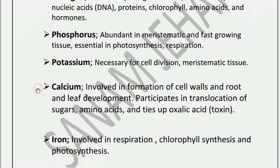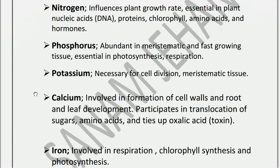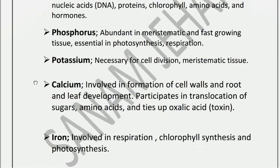Calcium is involved in cell wall formation and the development of roots and leaves. Calcium participates in the translocation of sugar and amino acids. Oxalic acid formation in the plant is a toxic material; oxalic acid is especially found in tomato seeds. Calcium participation affects sugar and amino acid translocation.